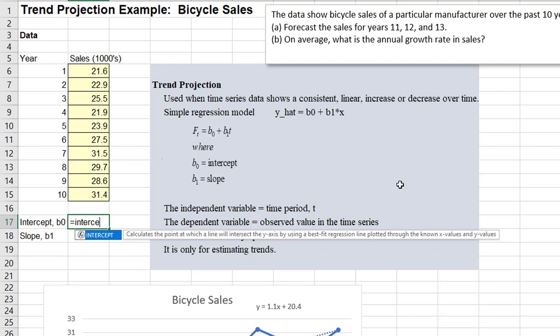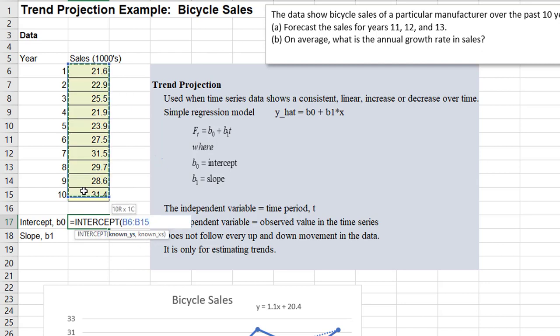So I'm going to hit tab just to complete the function. And so here the important thing was to, you got to put the y values first followed by the x values. So y values comma and the x values which are the years, the time periods.